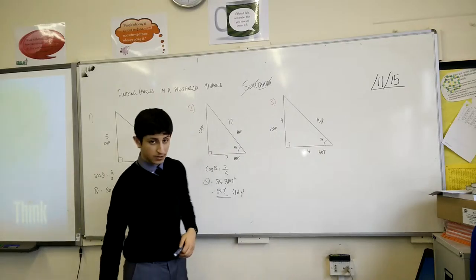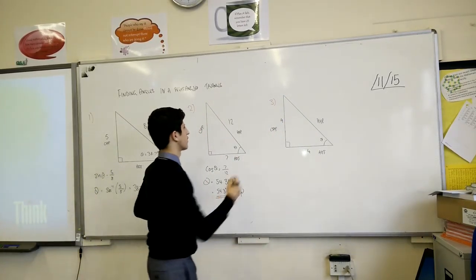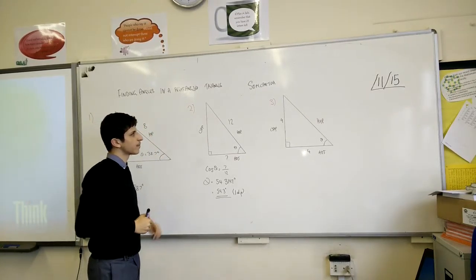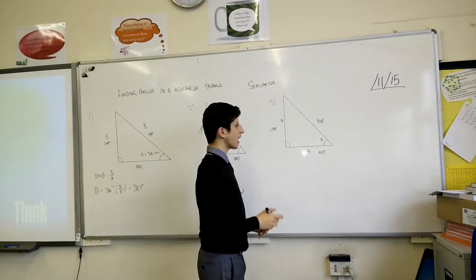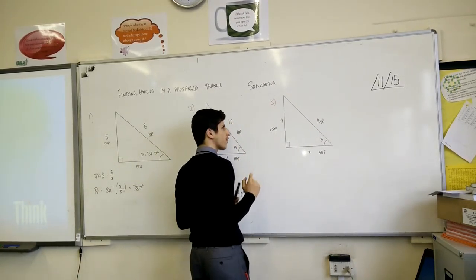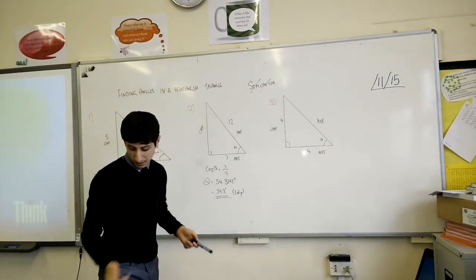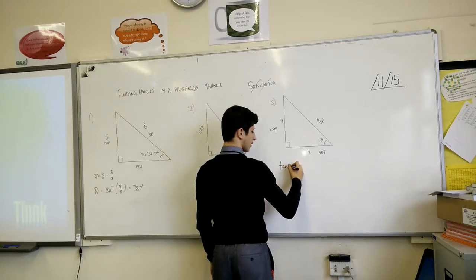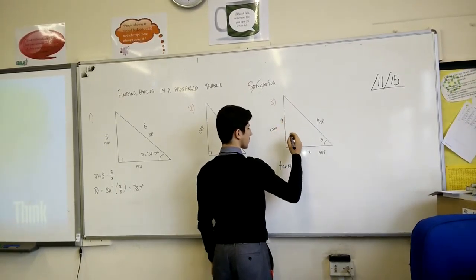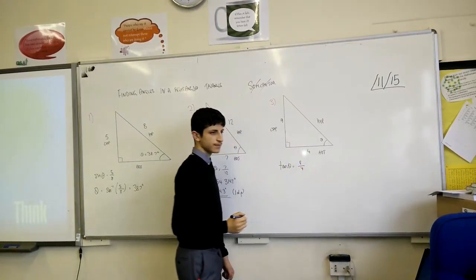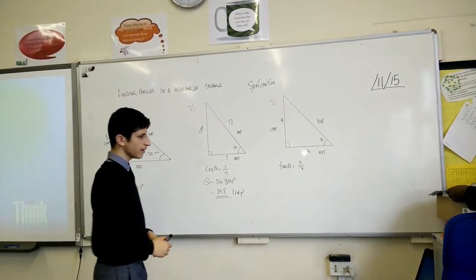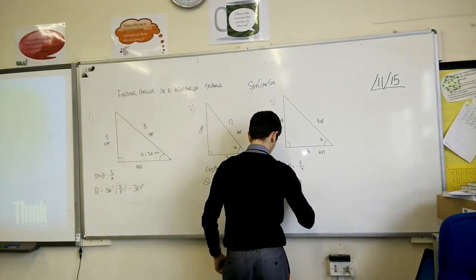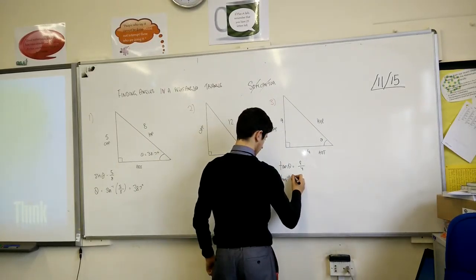Third question. I'm just going to rewrite the SOHCAHTOA again for this purpose. SOHCAHTOA. Now, I have an opposite and I have an adjacent, but I don't have a hypotenuse. Instantly, two of the functions comes out. What do you get left behind with? Well, you may have just noticed it was the tan function. In respect to theta, which is the angle we're going to find out, tan theta is equal to opposite, which is 9, and adjacent, which is 4. Now, you can't divide by tan, so what do you do? Surprisingly enough, there is also a tan inverse function. So theta is equal to tan minus 1, and it's 9 over 4.